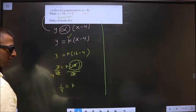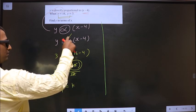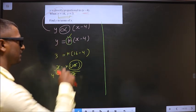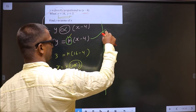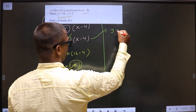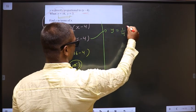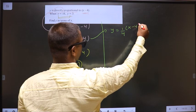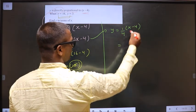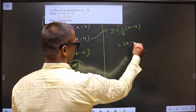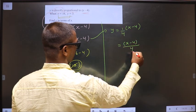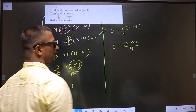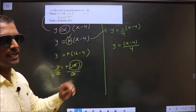Now replace k over here. So when you replace, this equation now becomes y equal to 1 by 4 of x minus 4. So 1 into anything is the same thing, so x minus 4 by 4. I am not writing 1.